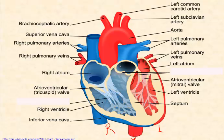The main job of the atrioventricular valves is to prevent backflow of blood back into the atria when the ventricles contract. They are anchored to the heart muscle itself by chordae tendineae, which prevents them from flapping back into the atria when there is a lot of pressure buildup. You can think of them almost as tethers — like the ropes on a parachute, where the parachute inflates but is kept from flapping around too much by cords that keep it in order.